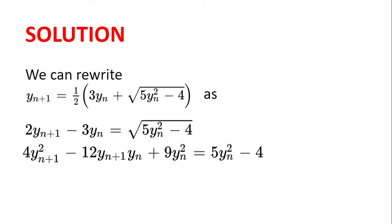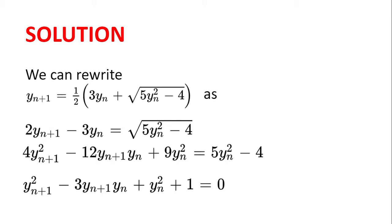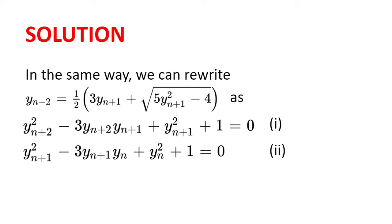We add 4 and subtract 5yₙ squared from both sides and then divide by 4 to get yₙ₊₁ squared minus 3yₙ₊₁yₙ plus yₙ squared plus 1 equal to 0. In the same way, we can rewrite yₙ₊₂ equal to half of 3yₙ₊₁ plus the square root of 5yₙ₊₁ squared minus 4 as yₙ₊₂ squared minus 3yₙ₊₂yₙ₊₁ plus yₙ₊₁ squared plus 1 equal to 0.